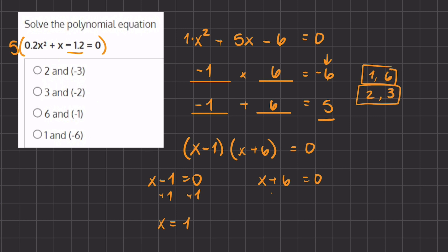Here we're going to add 1 on both sides and we have x = 1. The second equation is x + 6 = 0, and we're going to subtract 6 on both sides and we have x = -6.